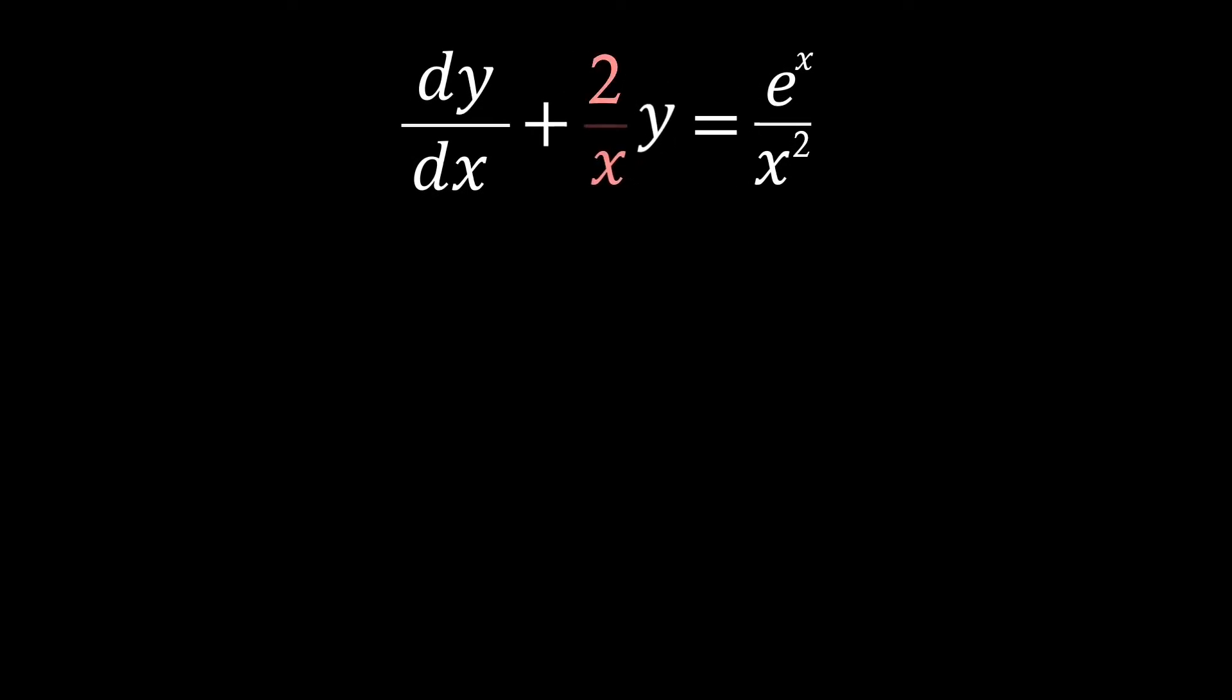So let's bring back our equation and see how we can apply this. We've just noticed that our P(x) function is simply just 2 over x. Therefore, to find our integrating factor, we need to exponentiate the integral of 2 over x in terms of x, which as you can see, just reduces down to x squared.